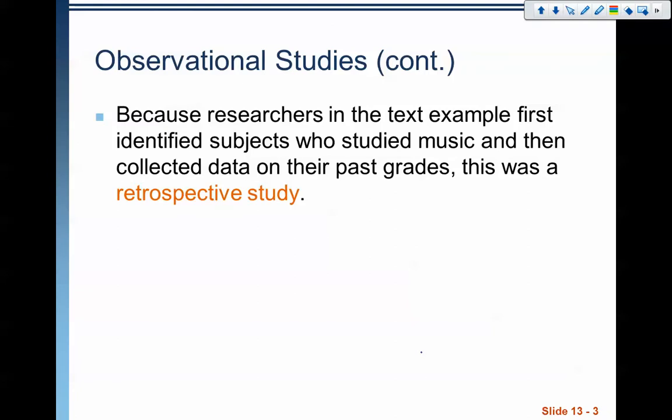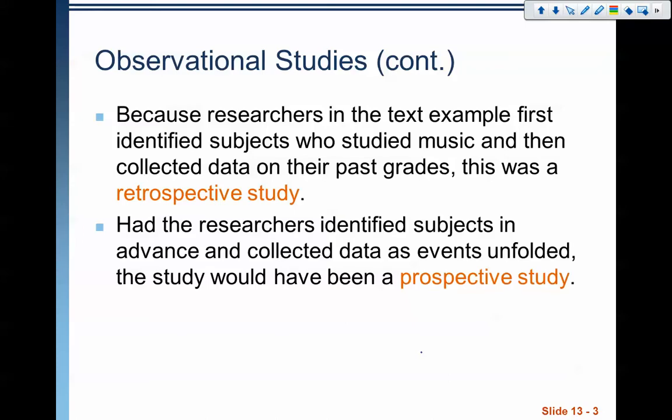There are two types of observational studies. In this example, subjects who studied music were identified and then data on their past grades was collected — that makes it a retrospective study. There's also a prospective study, where subjects are identified in advance and data is collected as they go through the years. So a retrospective study looks at things that have already happened, while a prospective study picks people and observes them over time.